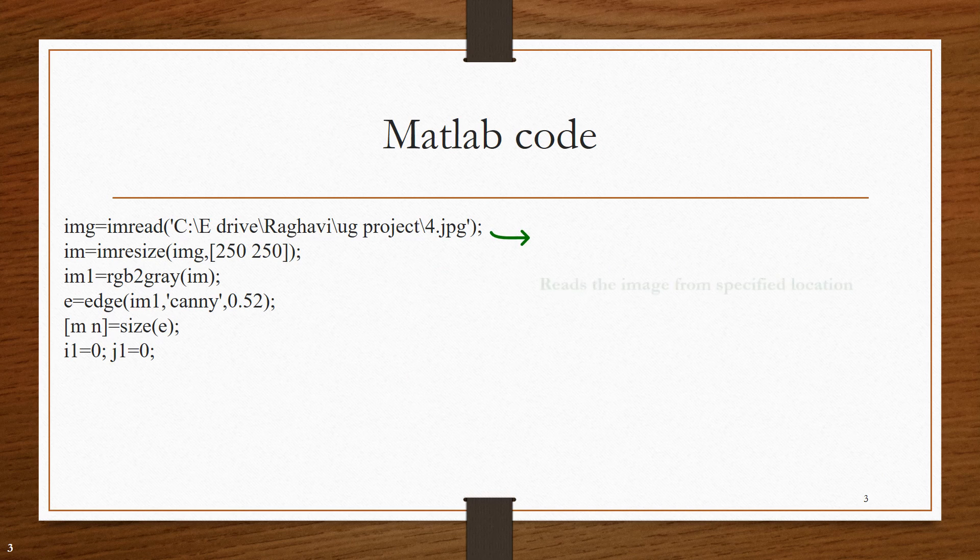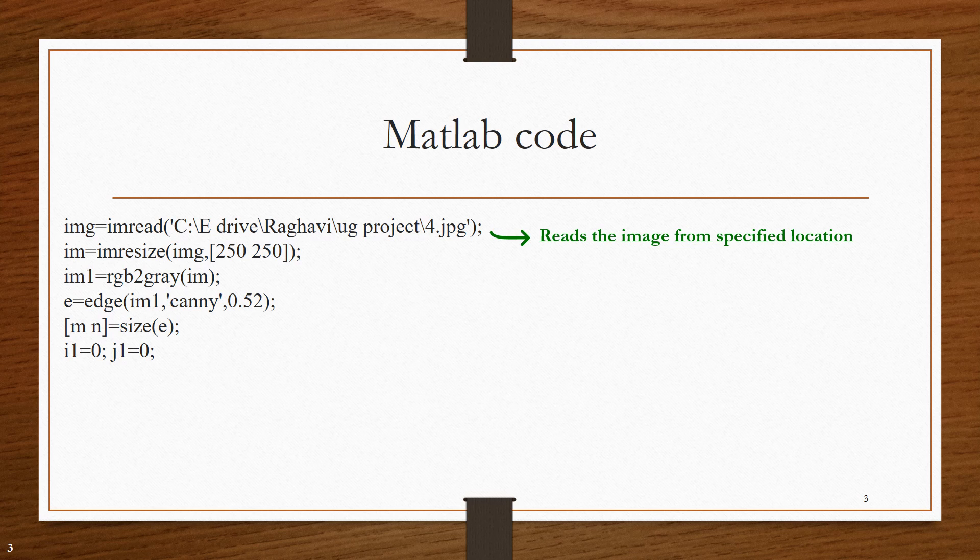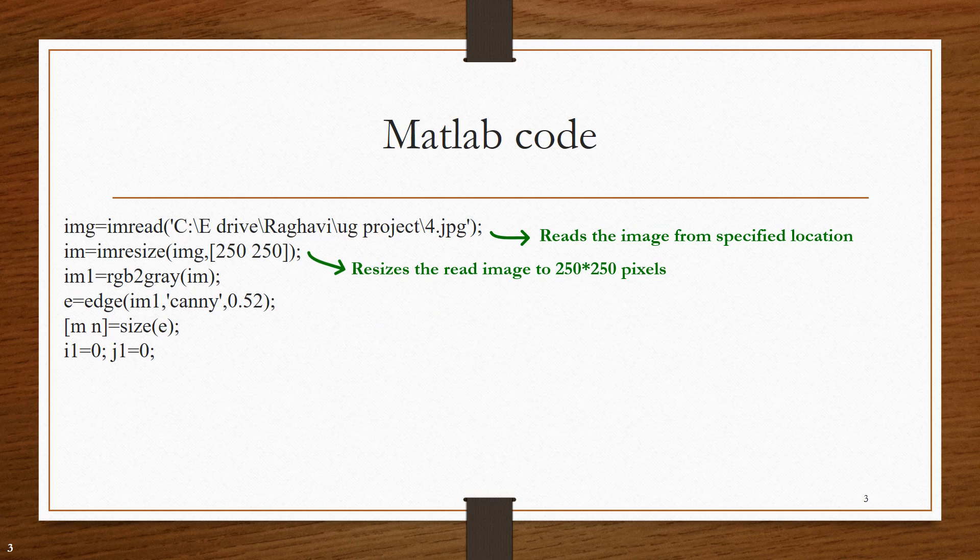The following is the MATLAB code for this grading process. imread reads the image from the specified location. imresize is used to resize the image into 250 by 250 pixels. Now, this resized image consists of 250 rows and 250 columns of different pixel values.